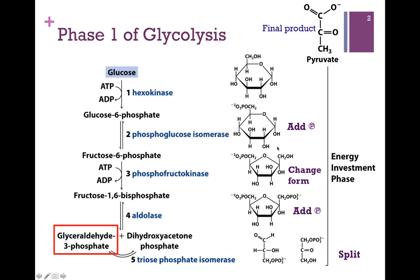In Step 1, we add our first phosphoryl group. We're going to change the form in Step 2 before we add that second phosphate in Step 3. Step 4 splits the molecule in two, and we have one more step to convert both products to glyceraldehyde-3-phosphate. So we start Phase 1 with one molecule of glucose, and we end with two molecules of glyceraldehyde-3-phosphate.